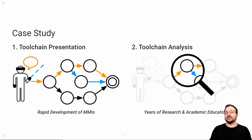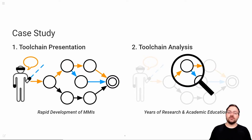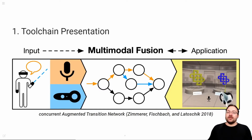In this case study, we report on the toolchain we develop and use to create multimodal speech and gesture interfaces for XR applications. We also analyze our toolchain in terms of its suitability for rapid development based on years of application in research and academic education. At the center of our toolchain is our fusion method, the concurrent augmented transition network.